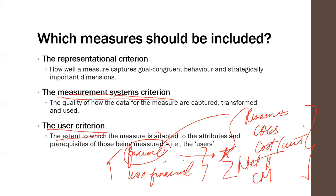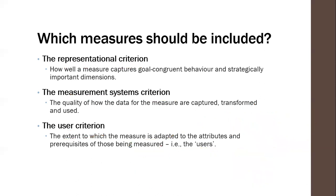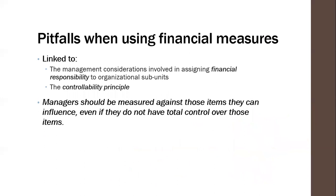From the user criterion perspective, people in the organization know what financial measures are and know what to do to increase or reduce these items according to the target. Representationally, the strategies of the organization are usually linked to a financial goal. However, there are pitfalls when you use purely financial measures in performance management. These pitfalls relate to management considerations involved in assigning financial responsibility to organizational subunits, and the controllability principle.